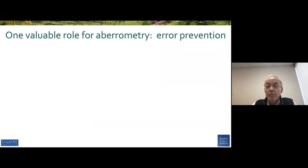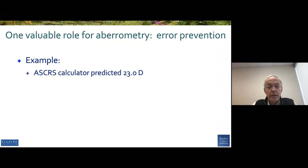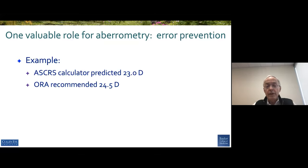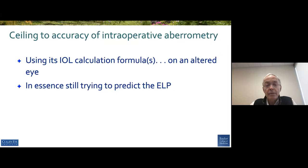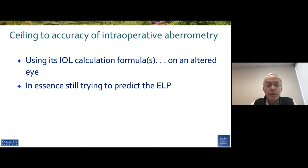Aberrometry is helpful, however, for error prevention. There was an example in my own practice where the Asterisk calculator predicted 23 diopters and the Aura recommended 24.5, and that caused me to do a lot of head scratching. We went back and found that an incorrect value for the axial length had been inserted into the Asterisk website. So anything you can do to prevent errors — Aura is one of them — is certainly valuable. The problem is we're measuring these eyes using standard IOL calculation formulas after surgery has been performed on a modified cornea, and we're still trying to figure out where the ELP is going to sit.